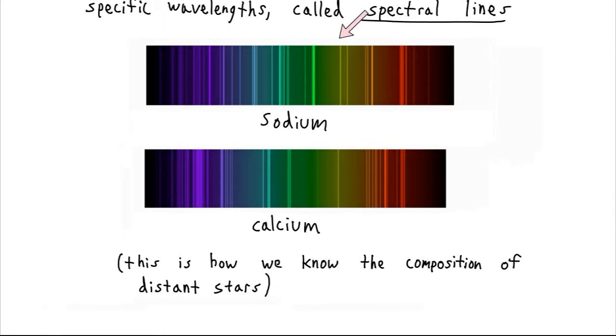And because of these unique fingerprints, we can figure out what the star is made of. And if these bands get shifted over a certain quantity, then we can use that to figure out how fast the star is moving away from us or towards us.